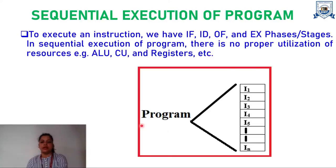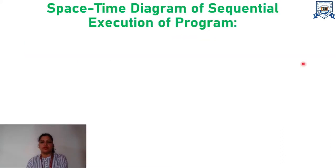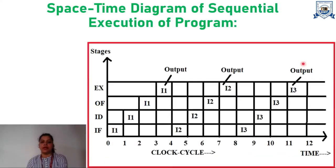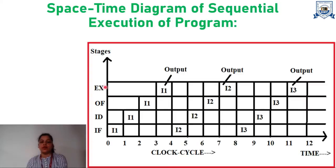Here, in this diagram, we have the program which is a collection of n number of instructions. In the case of sequential execution of a program, we have the space-time diagram as shown in this figure. In this, you can notice the four stages of the instruction: instruction fetching, instruction decoding, operand fetching, and the execution phase. Time is represented on the x-axis. Each instruction has these four stages.